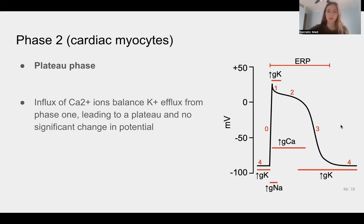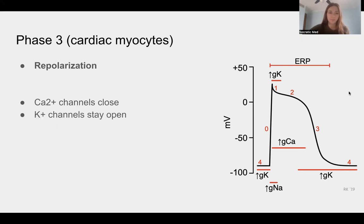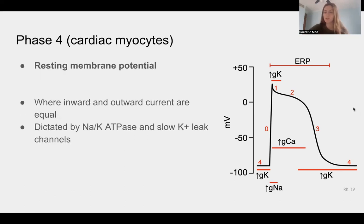Phase two is the plateau phase, where the influx of calcium from voltage-gated calcium channels balances the efflux of potassium from channels that opened in phase one — so there's not much net change in voltage. Phase three is repolarization: calcium channels close while potassium channels stay open, so potassium rushes out and makes the cell more negative. Phase four restores the resting membrane potential, where inward and outward currents are equal, dictated largely by the sodium-potassium ATPase and slow potassium leak channels.